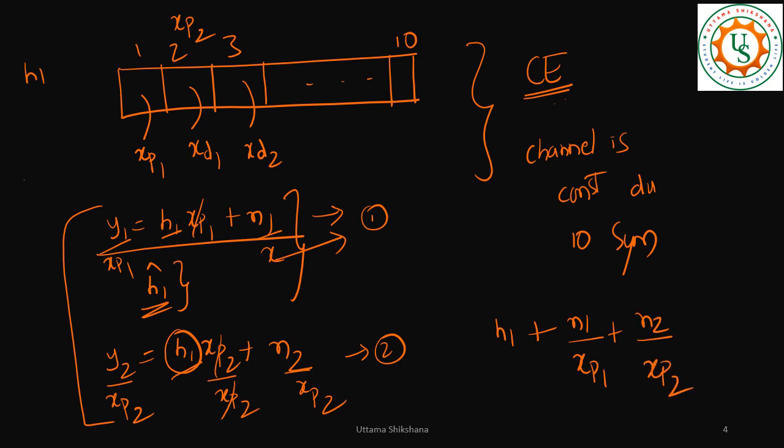If I take the average, h1 plus h1 by 2 will remain as h1. Plus if I take average here then it will become n1/xp1 plus n2/xp2, and average means I'm going to divide the entire thing by 2.